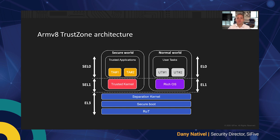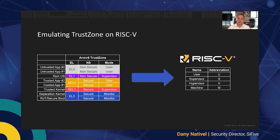One limitation we can observe is that two tasks within the same exception level are not isolated from each other. This is fine if the code is audited and trusted, but it also increases the attack surface and potential side effects. Nevertheless, TrustZone has been fairly popular and we are seeing customers coming to us for RISC-V migration and asking for similar security partitioning. So what we're looking for is a way to emulate ARM TrustZone architecture without breaking the RISC-V ISA.